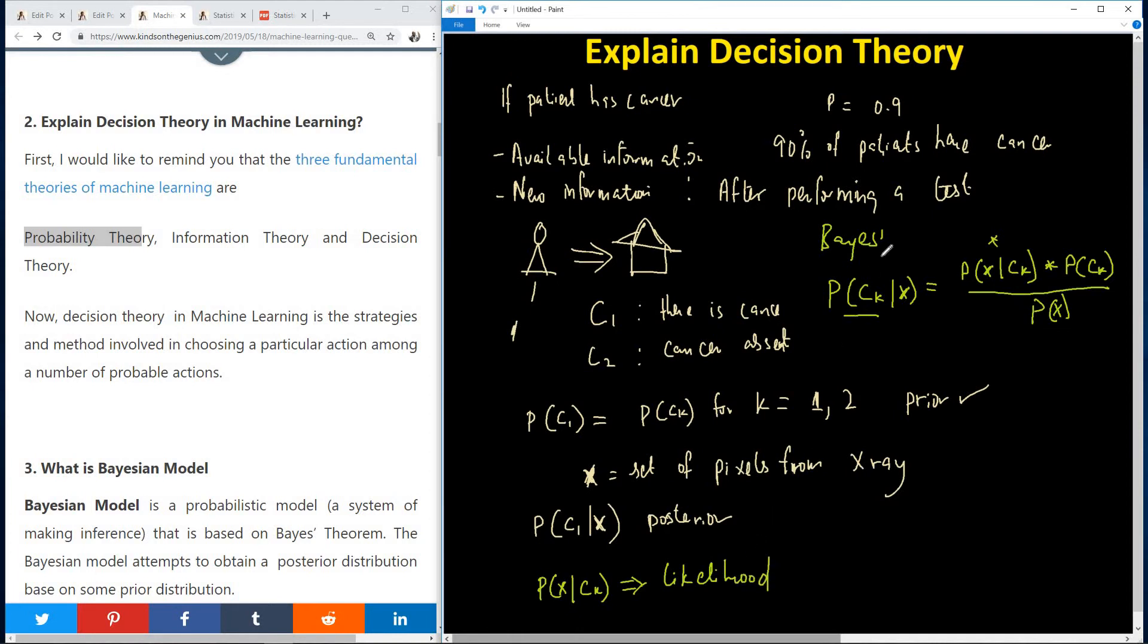So in decision theory, we will have to try to maximize this quantity and also find the posterior probability. So these operations carried out will help us make a decision whether the patient have cancer or not, or whether the patient belongs to C1 or C2.